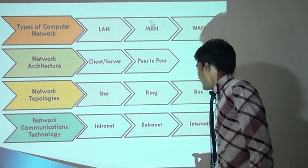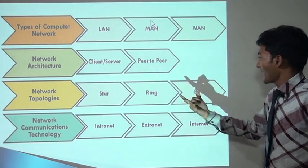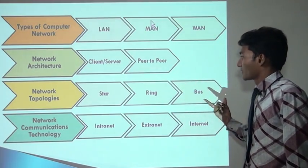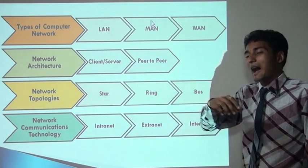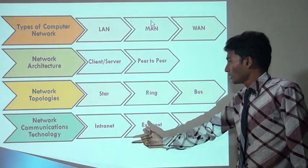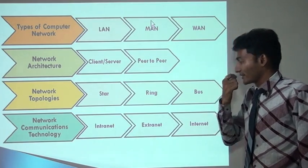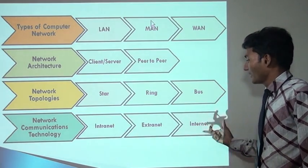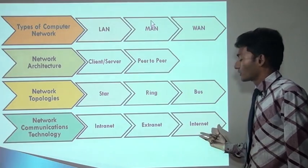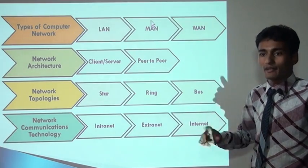The network topology — there are basically three types: star topology, ring topology, and bus topology. Topology means the basic architecture of the network. Network communication technology includes internet, extranet, and intranet. Through these types of network technologies, computers are connected with each other.